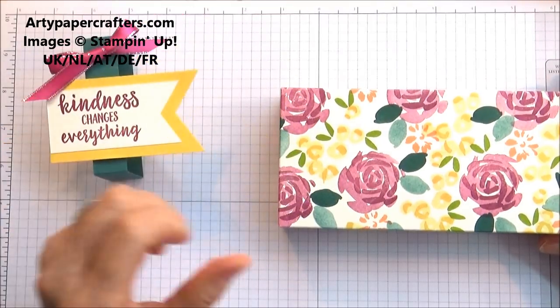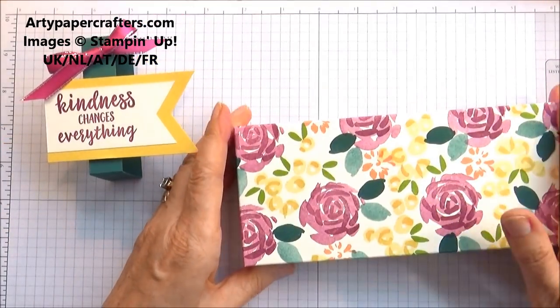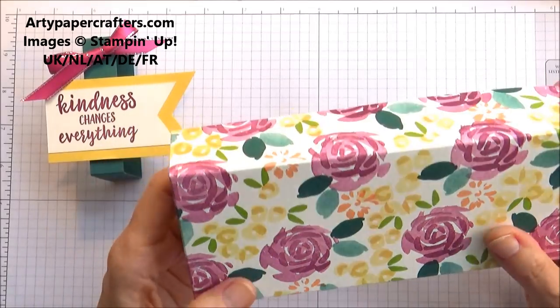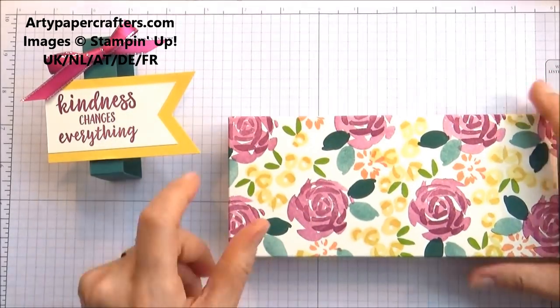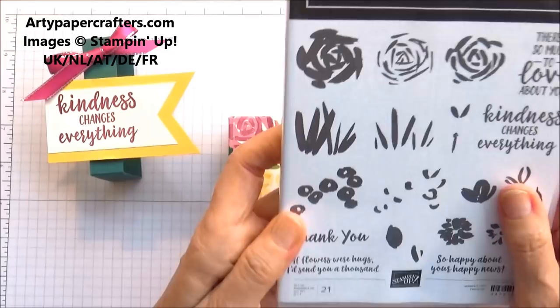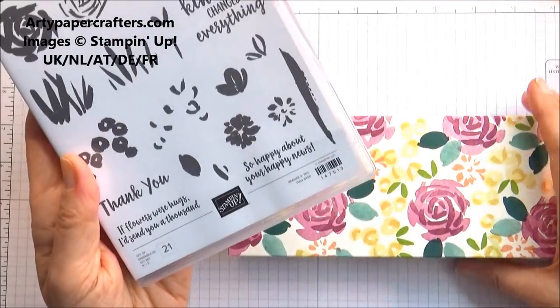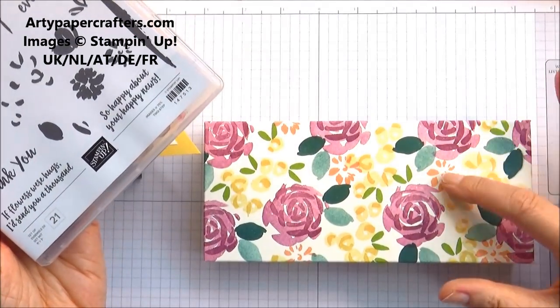Now the box that I've made here I hand stamped using the Abstract Impressions stamp set which I stamped in Old Olive, Garden Green,